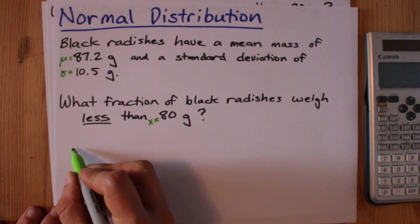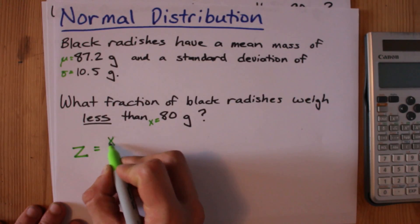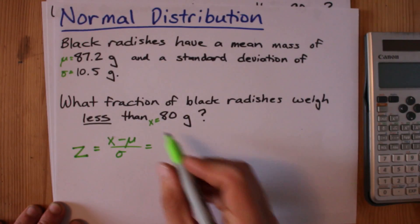Your job is to calculate a z-score for that particular radish. z is x minus mu over sigma, so all you have to do is plug the numbers in.